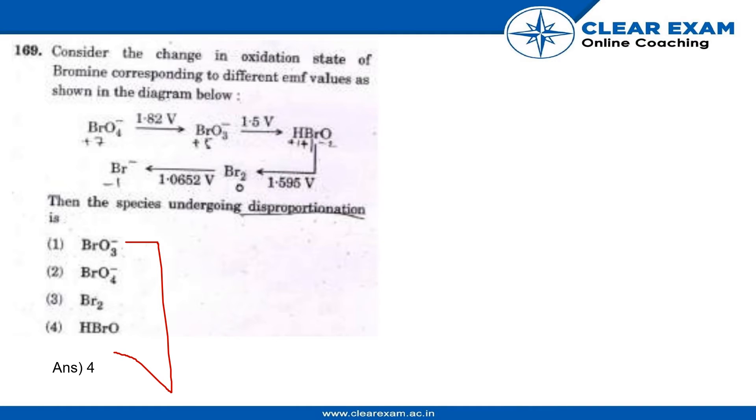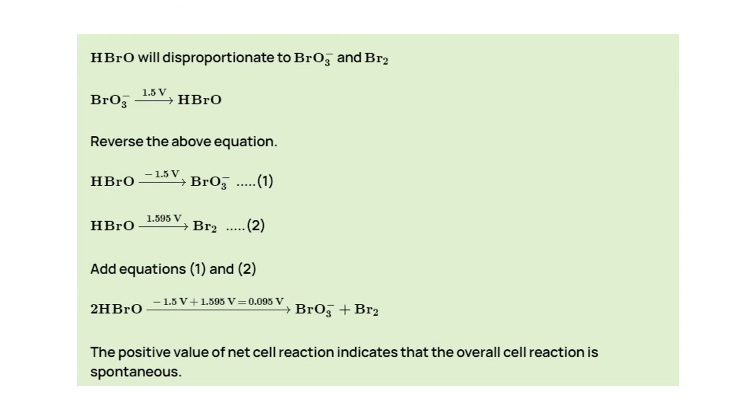The answer is HBrO. Let's look at the explanation. It will disproportionate to BrO3- and Br2. BrO3- at 1.5 voltage gives HBrO.